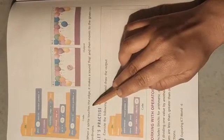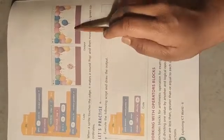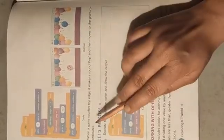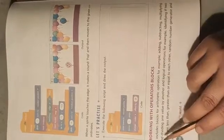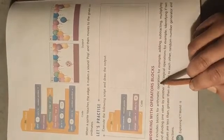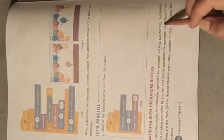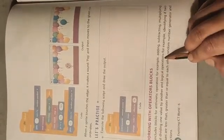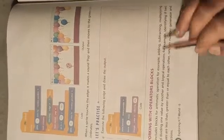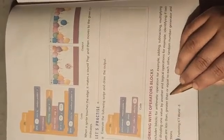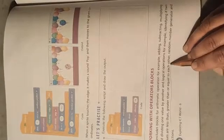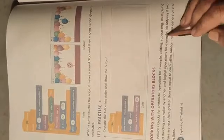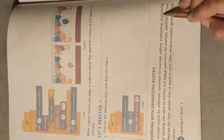When the sprite touches the edge it makes a pop sound and then moves to the given coordinates. Working with operator blocks: includes blocks for arithmetic operators such as addition, subtraction, multiplication, and division; and logical operations such as identifying if two values are less than, greater than, or equal to each other, random number generation and functions.